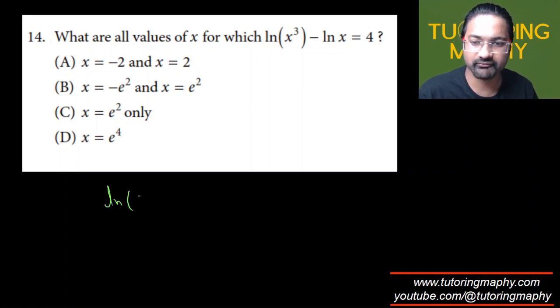Whenever you have log of something raised to a power, then that power will drop outside like this. So this is going to look like 3 ln of x minus ln of x is equal to 4.